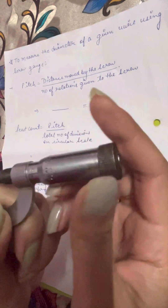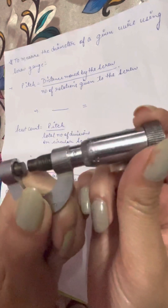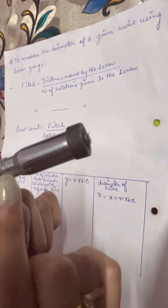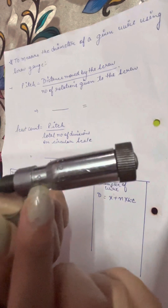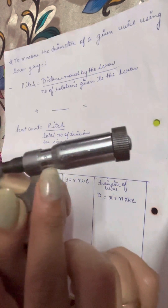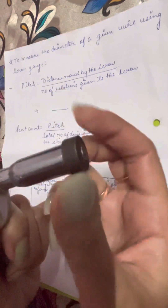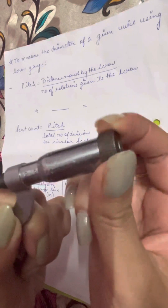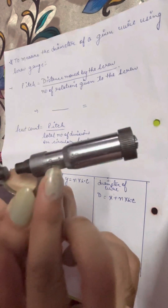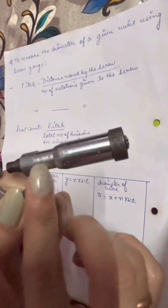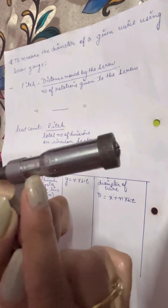We have two scales. This scale is called the circular scale, and this scale is called the main scale. This line is known as the reference line. The main scale goes from 0 to 15 millimeter, and each line on the main scale is equal to 1 millimeter.